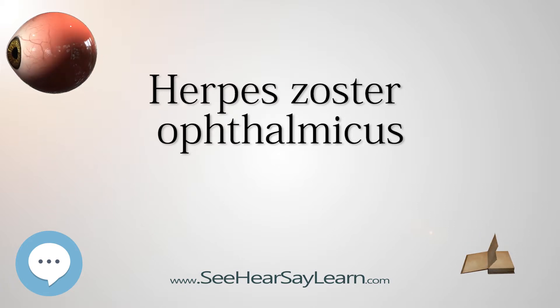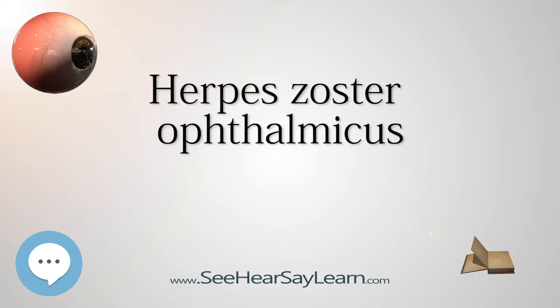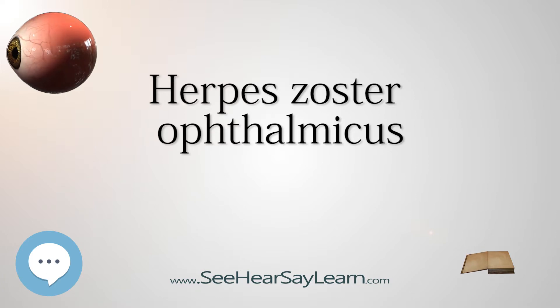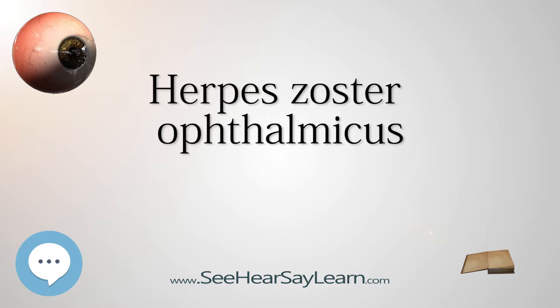Necrotizing interstitial keratitis is characterized by stromal infiltrates, corneal thinning, and possibly perforation. It occurs between 3 months and several years after the onset of the rash and is rare.